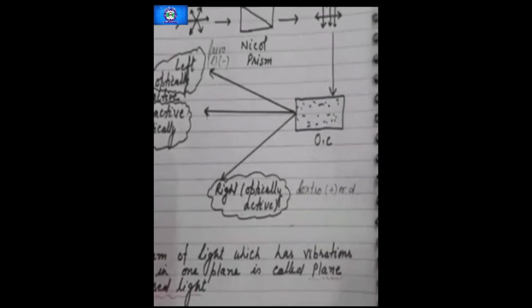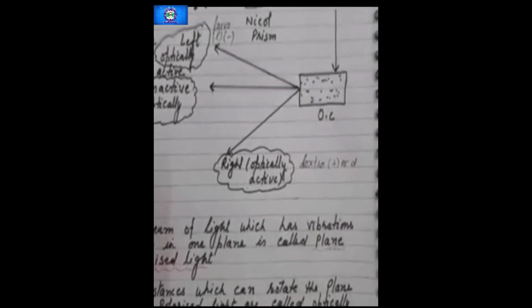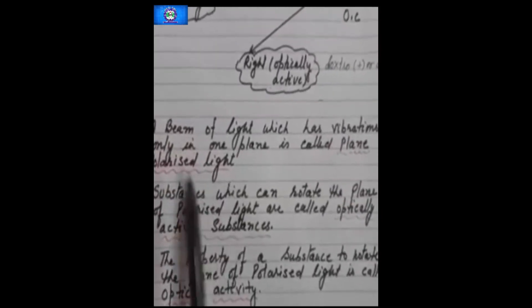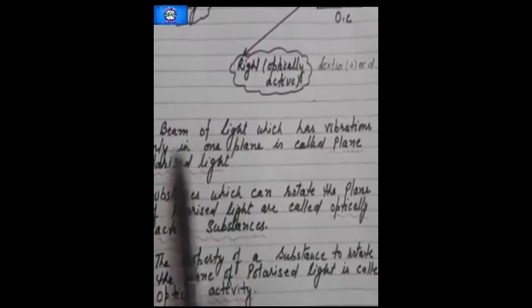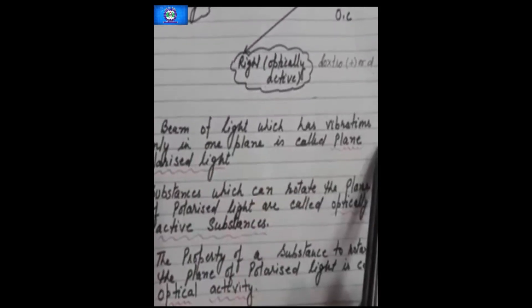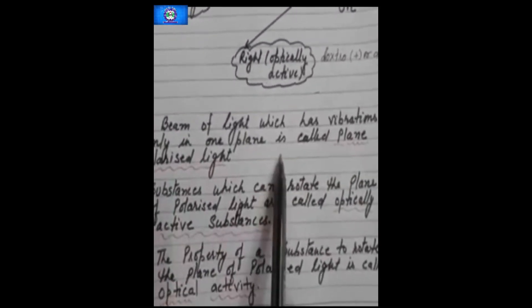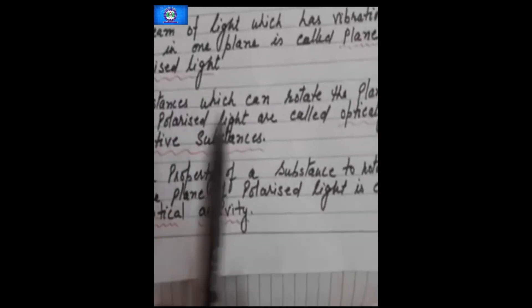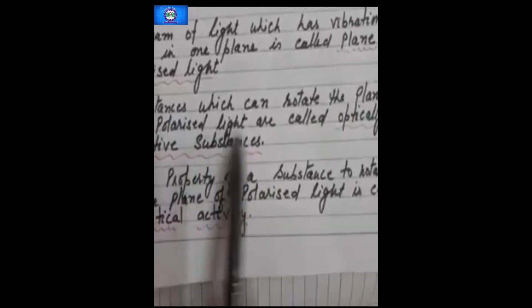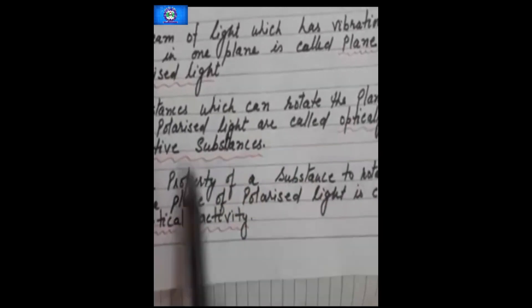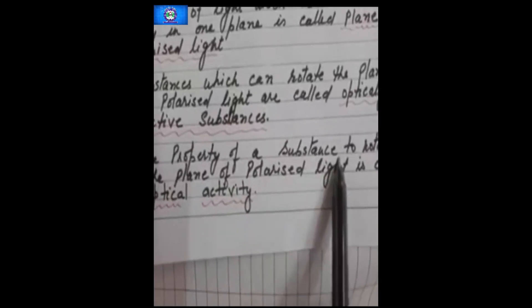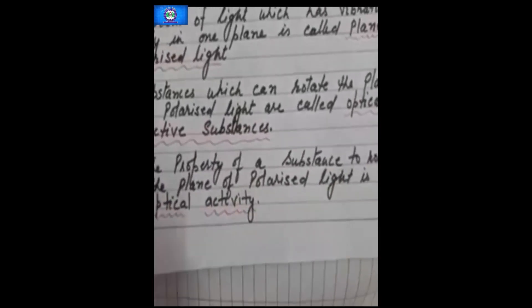To summarize: a beam of light which has vibration only in one plane is called plane polarized light. Substances which can rotate the plane polarized light are called optically active substances. The property of a substance to rotate the plane polarized light is known as optical activity.